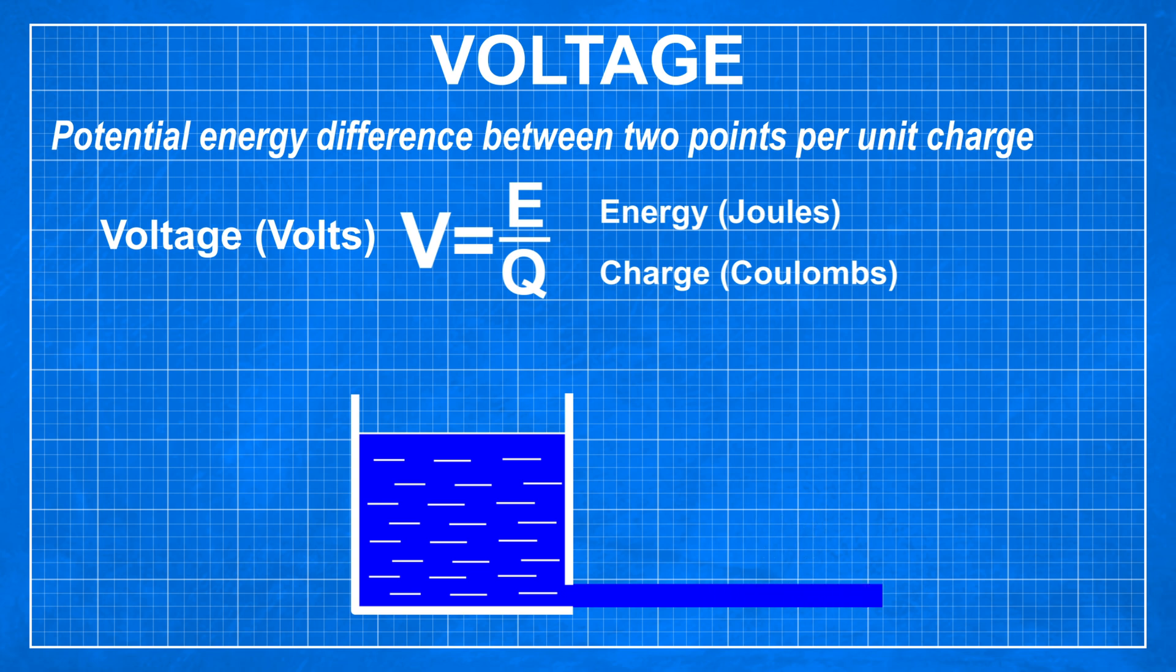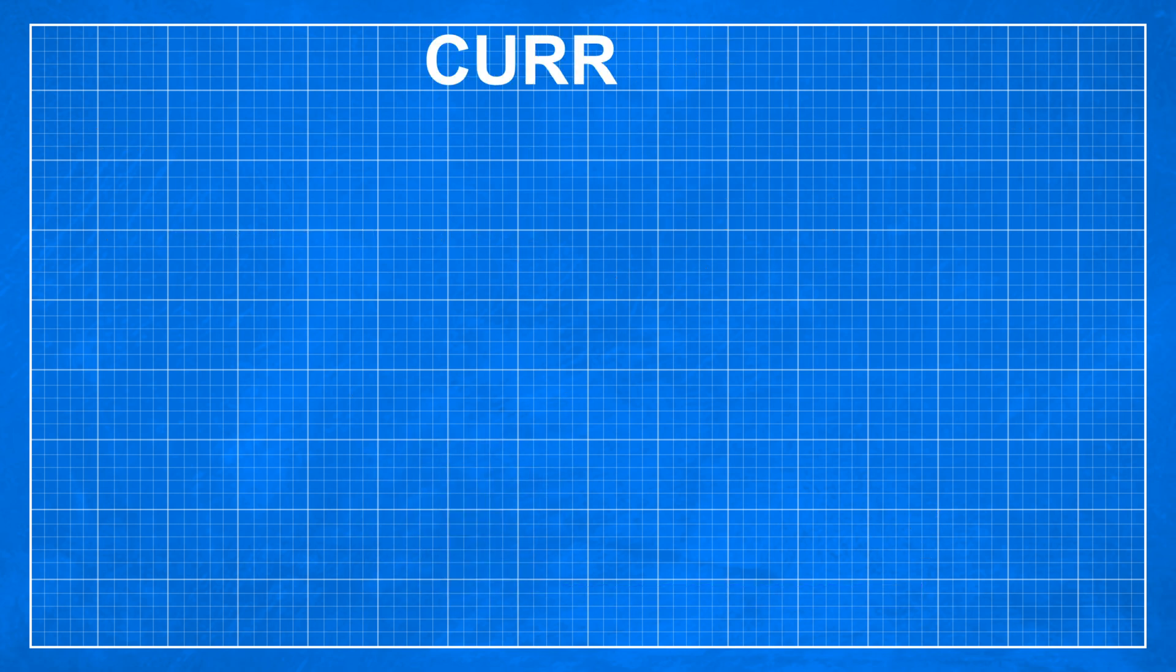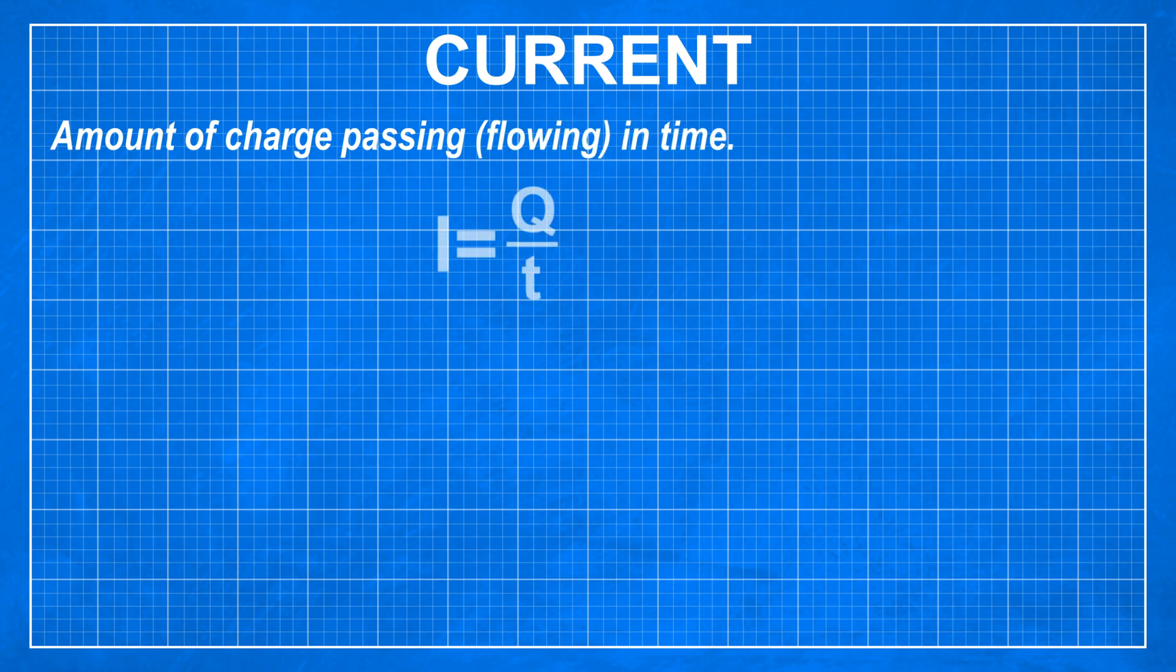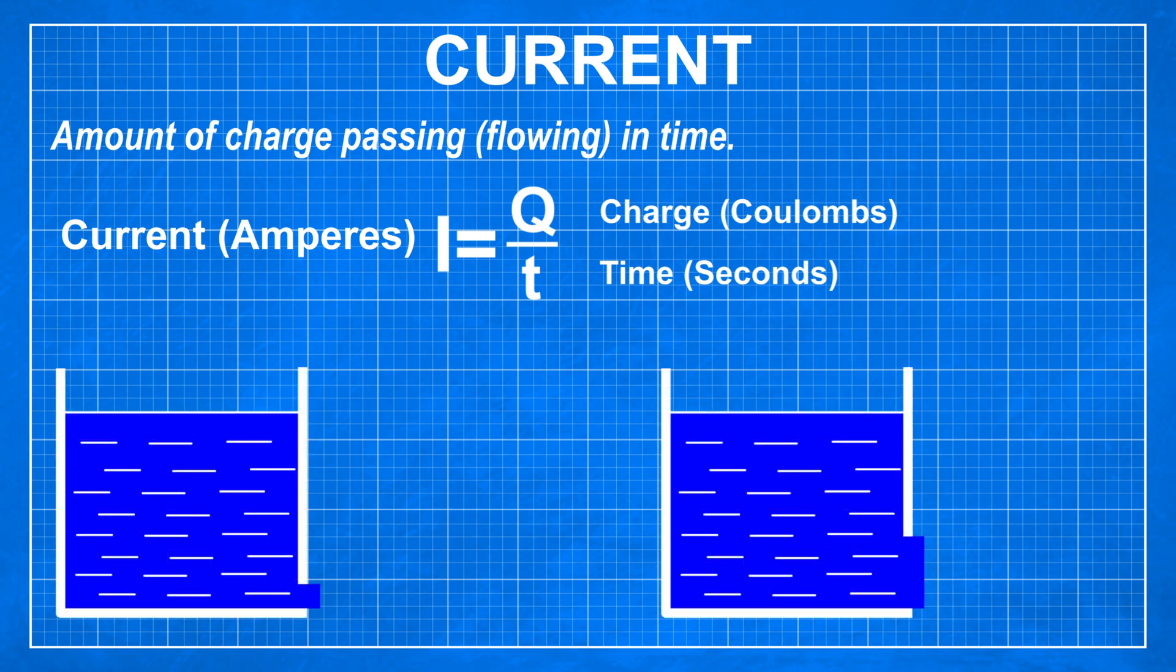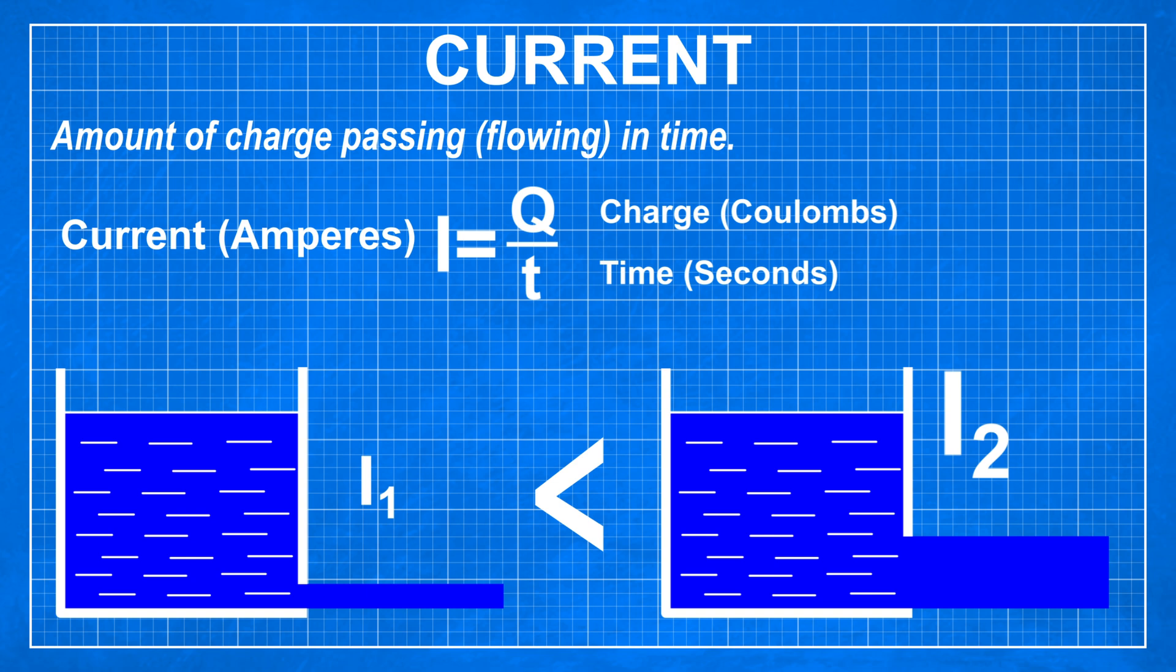We can say that we can push 9 volts of charge through a circuit. Current on the other hand can be compared to a flow of water. It is expressed in amperes which represent amount of charge flowing in time. And back to a tank if we increase size of a hole at the bottom more water can flow out. Length of a stream stays the same but more water flows out creating thicker stream.